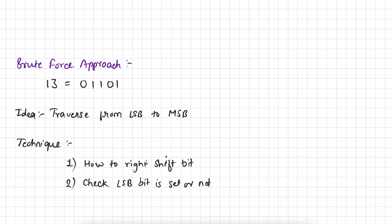Let's first discuss the brute force approach to solve this problem. Let's say the number is 13 — this is the binary representation of number 13. The idea is simple: we simply traverse this binary representation from least significant bit to most significant bit, meaning from right to left. In each iteration, we check if the bit is set or not. If the bit is set, we increment our count.